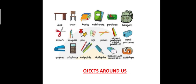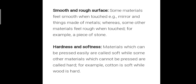In this slide you can see various objects around us — desk, chair, books, notebooks, clips, and pencils. The first property is smooth and rough surface. Some materials feel smooth, meaning our hand can slip easily on that surface. Materials where our hands cannot slip easily are known as rough surface.